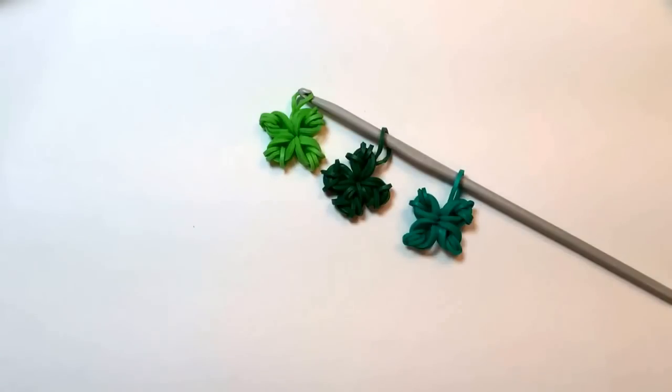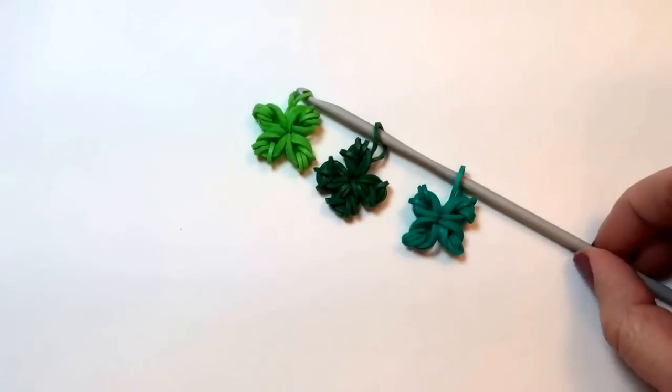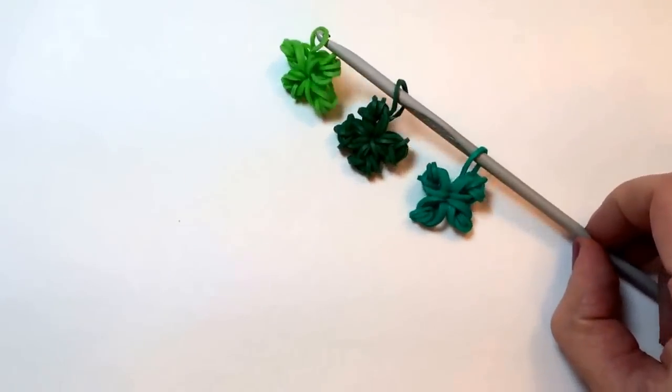To make this design, you will need 13 green rubber bands. I've made an example in each of the three different rainbow loom brand greens that are available, so you can take a look and decide which one you like best. I'm going to work today using the darkest green.